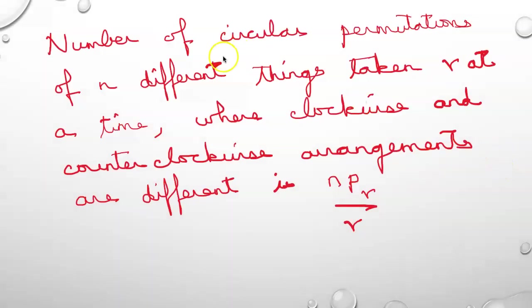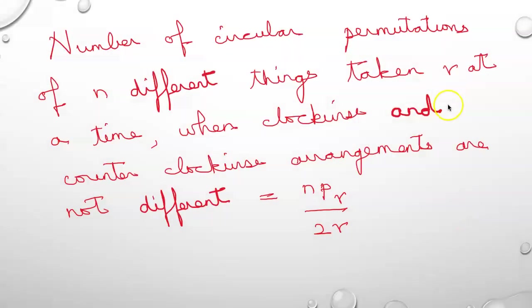The number of circular permutations of n different things taken r at a time, when clockwise and counterclockwise arrangements are not different, is nPr divided by 2r.